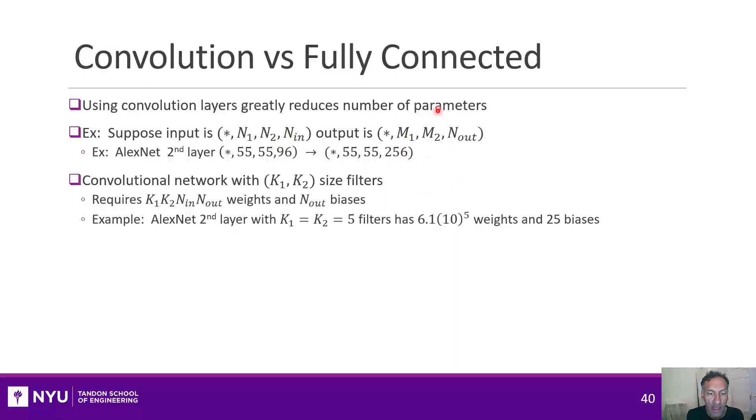Now, if you just count the number of parameters that you would need to implement the filters, you will need, in the weights, K1 times K2 parameters for each filter, and you multiply them by the product of the input and output channels. And similarly, you have the biases for one bias per output channel. So if you do that math for this second layer of AlexNet, you get about 600,000 weights.